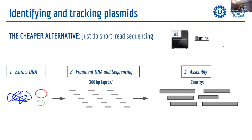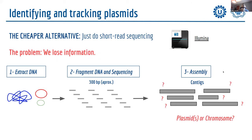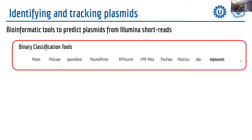The cheaper alternative is short-read sequencing with Illumina technology. We extract the DNA, fragment it into small pieces, and use assembly to stitch those fragments together. We don't obtain a complete genome but longer stretches of DNA sequence called contigs. The problem is we lose information — we don't know if contigs derive from the chromosome, from one plasmid, or from multiple plasmids.